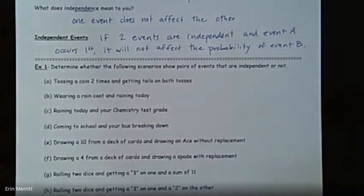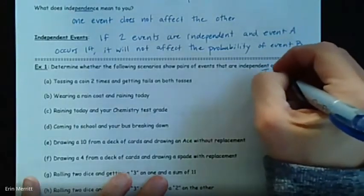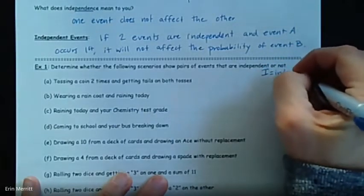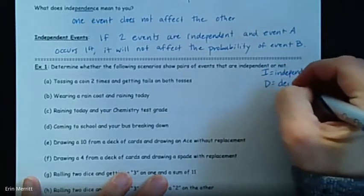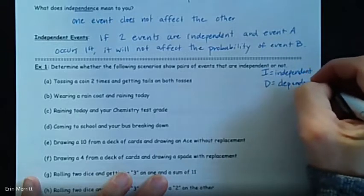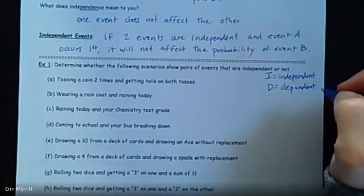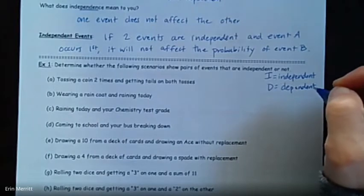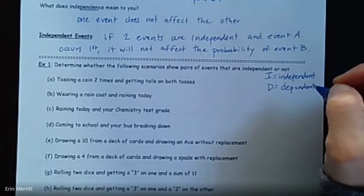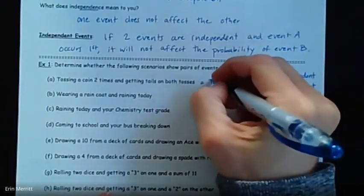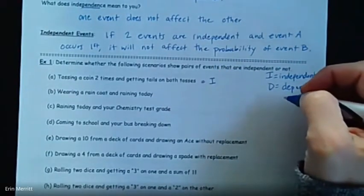So with that being said, it says determine whether the following scenarios show pairs of events that are independent or not. You have to think: would doing the first event affect the second one? We're going to put an I for everything that's independent and a D for everything that's dependent. Tossing a coin two times and getting a tail on both tosses — unless you have a trick coin, that should be completely independent. The first toss shouldn't affect how the second toss goes.